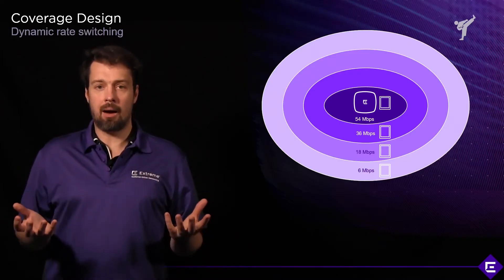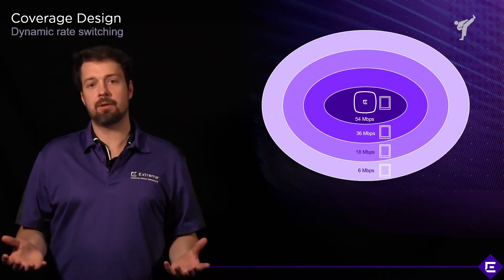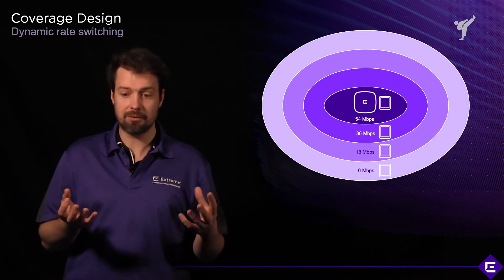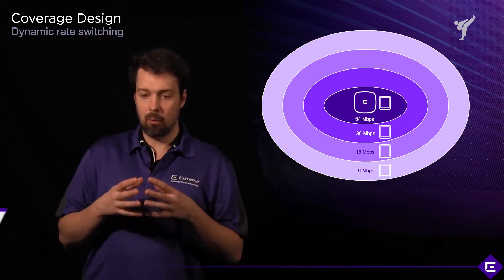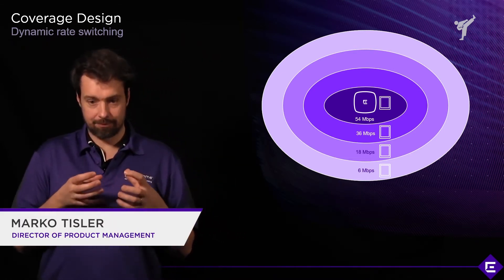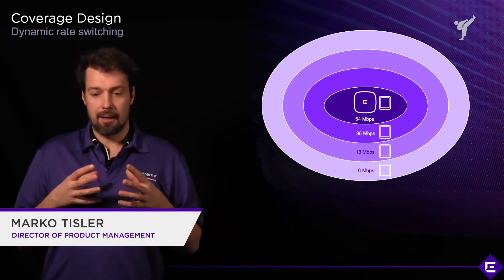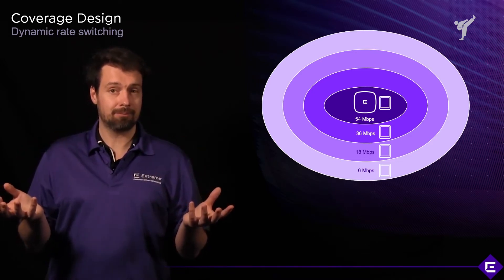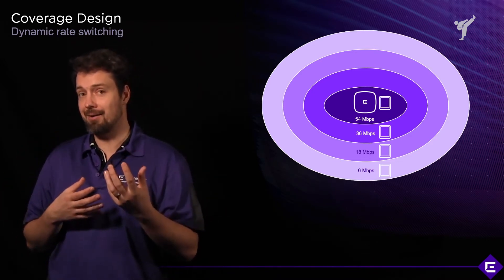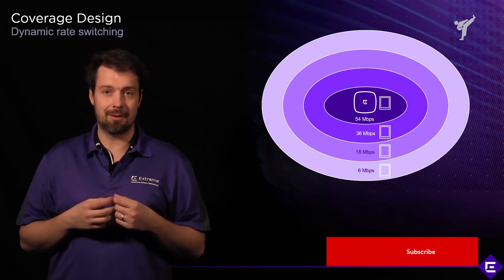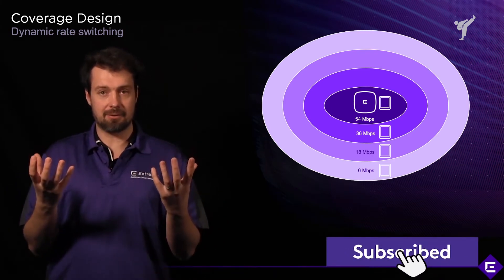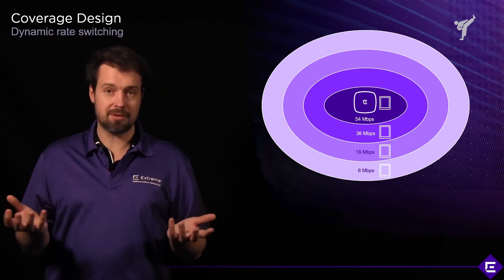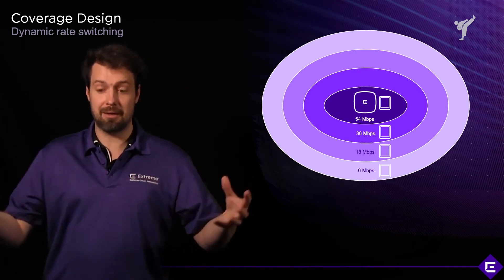Knowing how received sensitivity works, how SNR works, and how RSSI works, we'll take a look at data rates. The stronger the signal, or the better the SNR, the bigger the MCS, or the Modulation and Coding Scheme, the better the data rate.